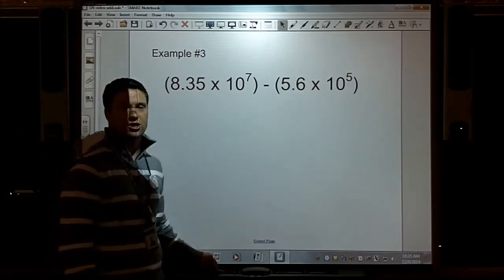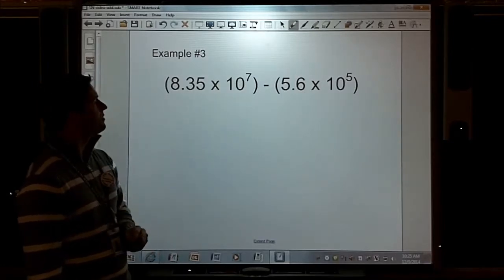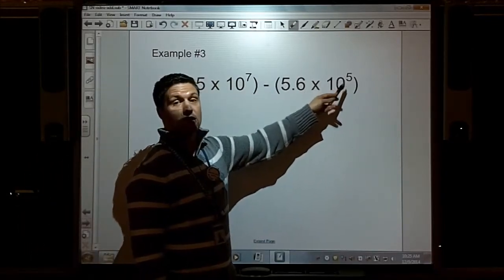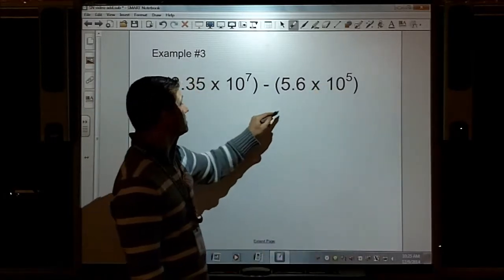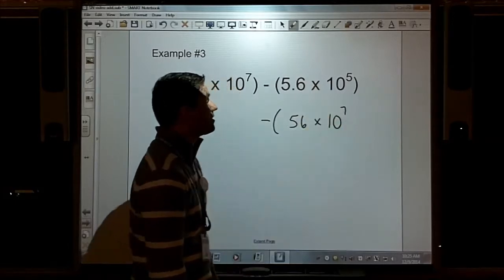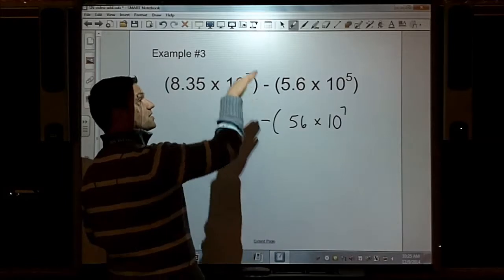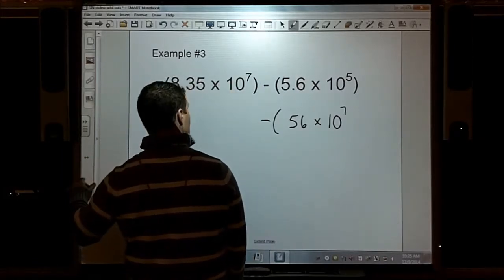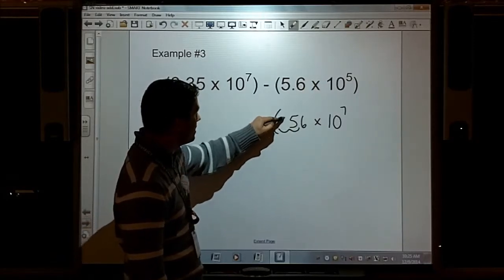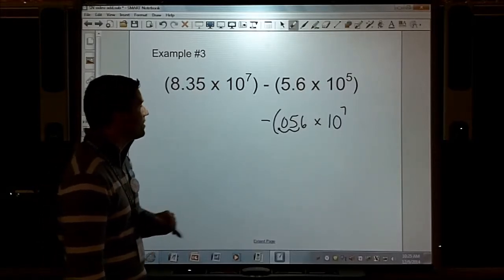How about one with subtraction? 8.35 times 10 to the seventh minus 5.6 times 10 to the fifth. I'm going to take that one that is times 10 to the fifth and make it times 10 to the seventh. It went up two places from 5 to 7, so my decimal has to go down by a factor of 100. So it's .056 times 10 to the seventh.